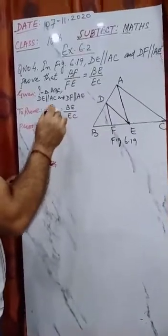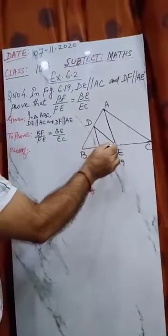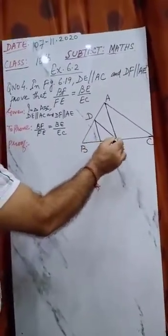What you have to prove? You have to prove that BF upon FE is equal to BE upon EC.